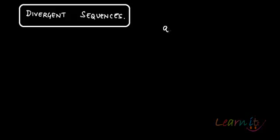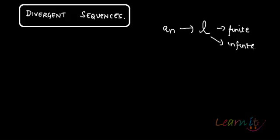In this video, let's try and discuss the concept of divergent sequences. If you have a sequence tending towards limit L, in case this limit is finite, you call it a convergent sequence. In case it is infinite, you call it a divergent sequence. So how do you define divergence? Let's see how to define divergence and use our epsilon definitions to define that.